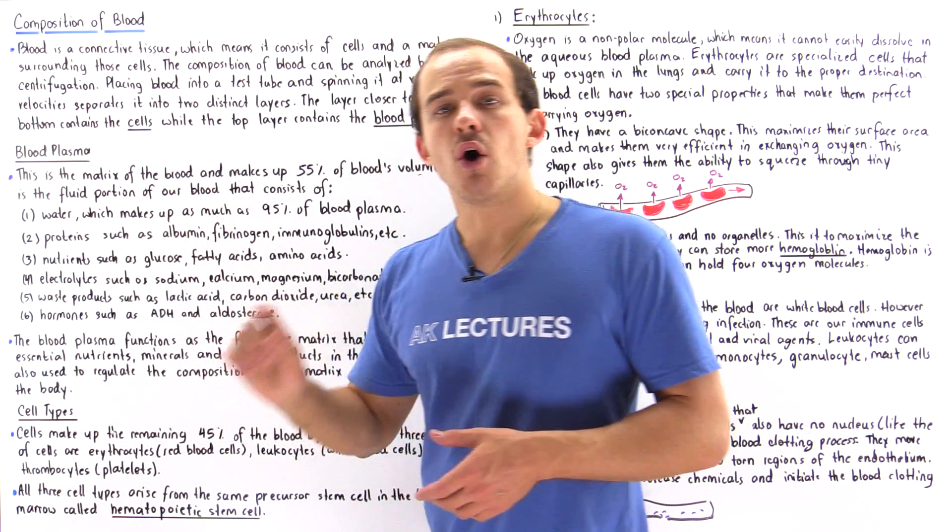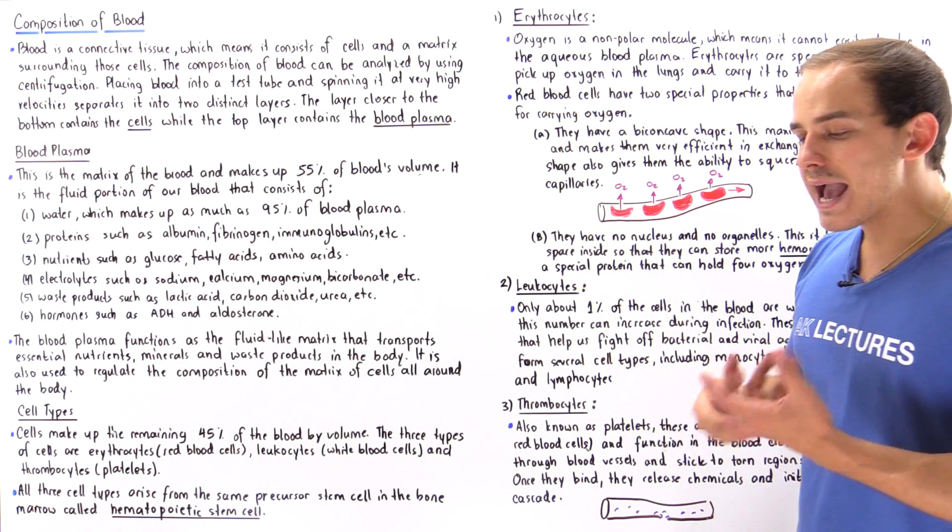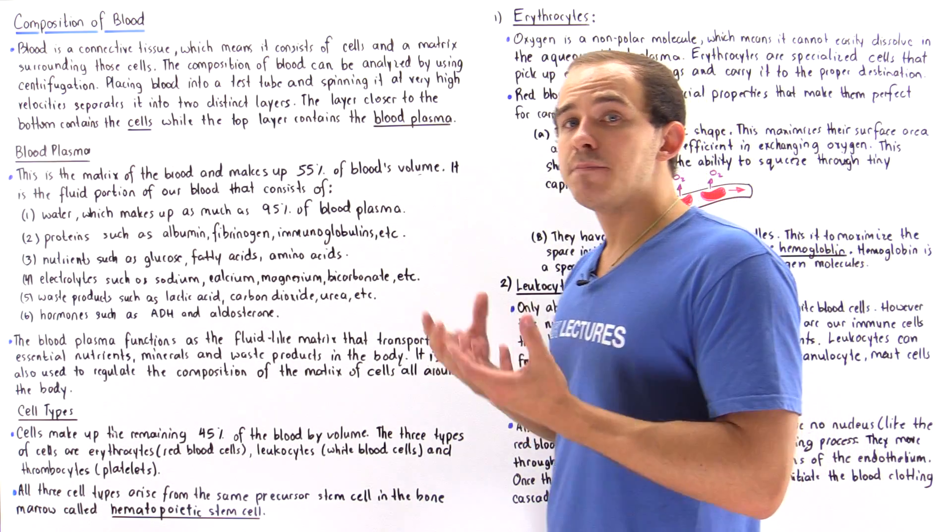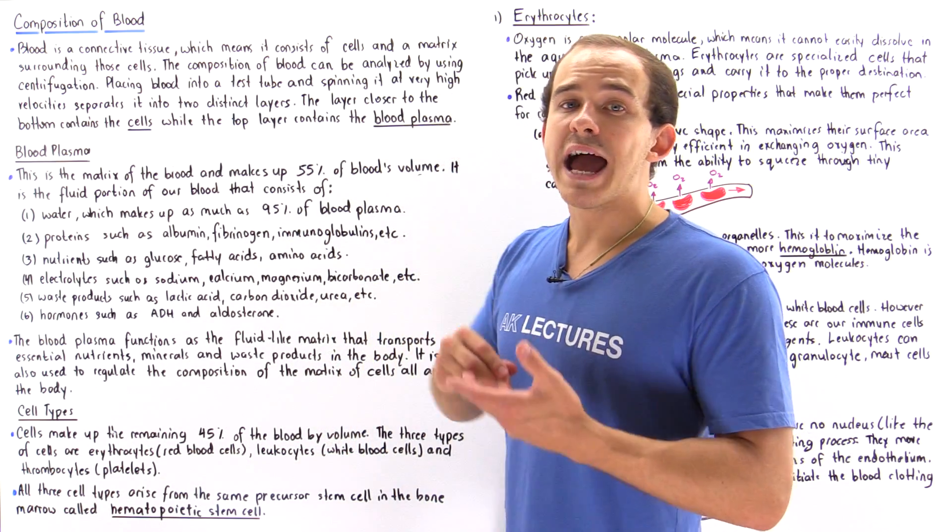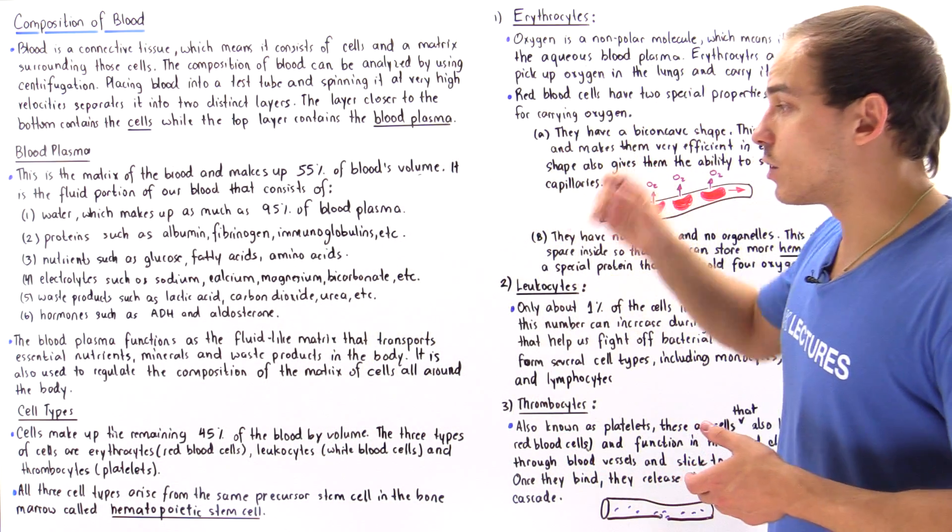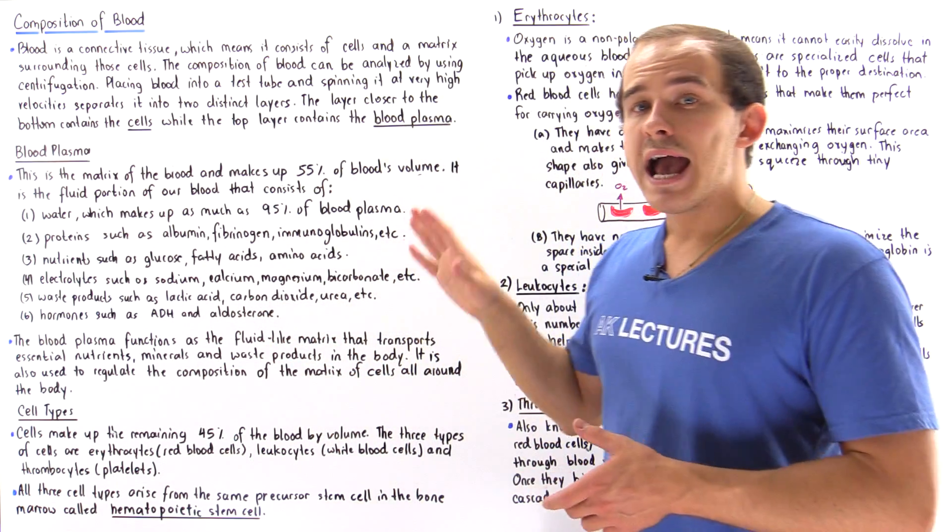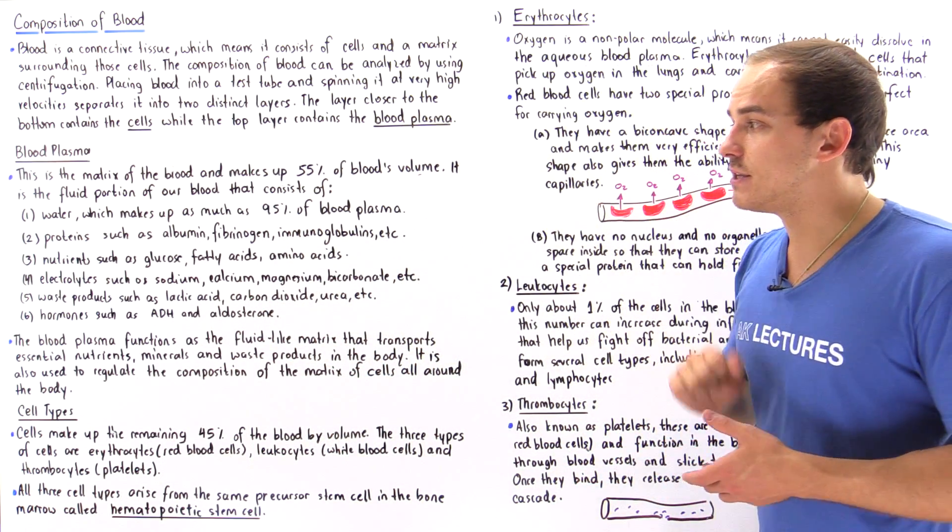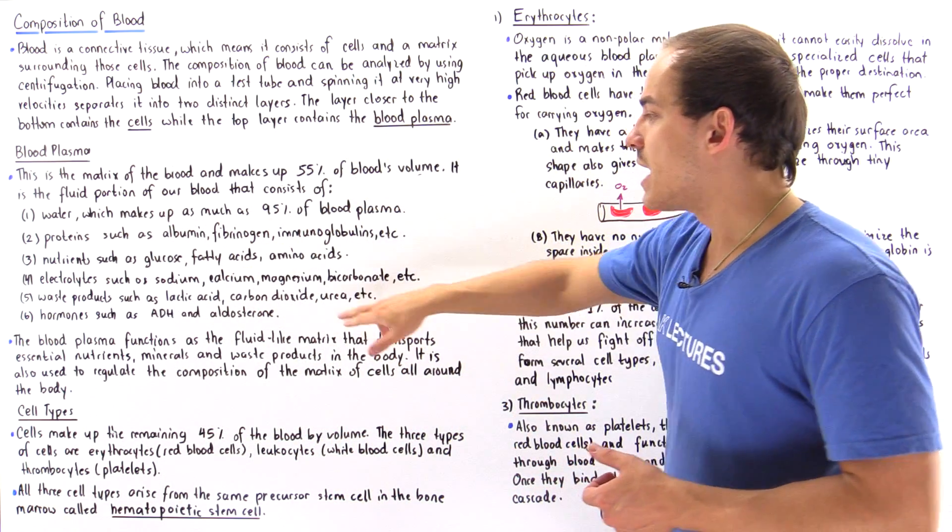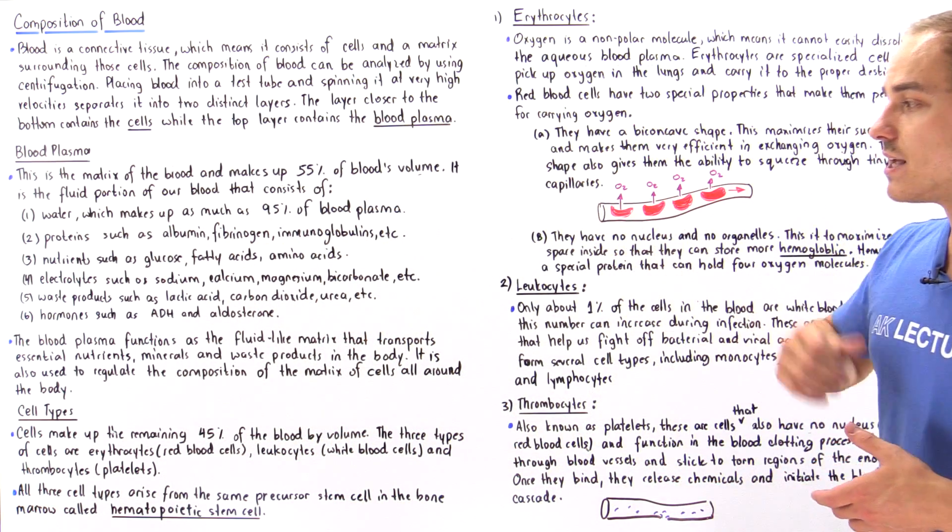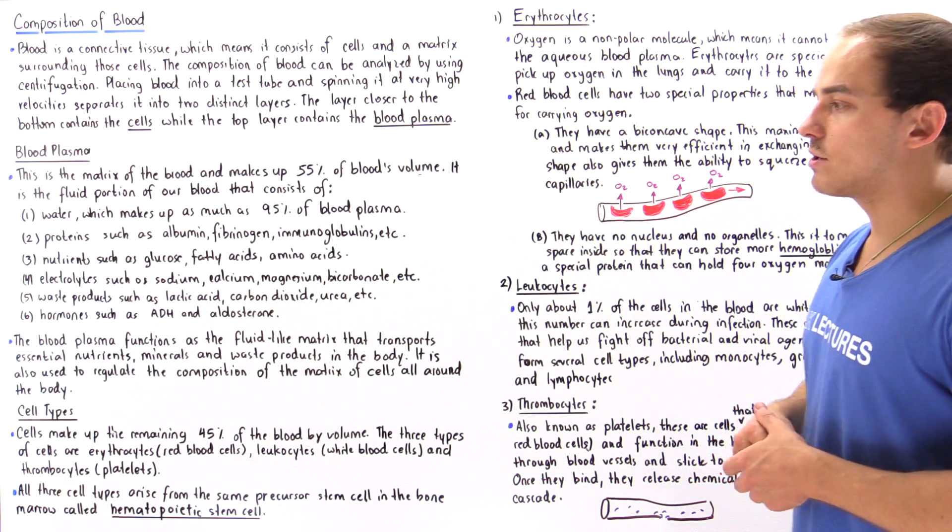Number five, we also find waste products. So when the cells carry out their processes, they produce waste products such as, for example, urea, lactic acid and our carbon dioxide. And these things are released into our blood and they end up in their specific location. For example, lactic acid ends up in the liver, our carbon dioxide ends up inside our lungs and urea ends up in our kidneys.